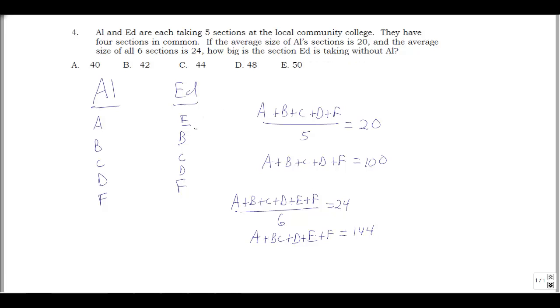We don't know how big the section Ed is taking without Al, that's section E. Well, we have these two equations. What we can do is subtract one from the other. These left-hand sides are almost the same, just the bottom one has this E. So if we take this thing in red here, and then we'll subtract off this thing above. Let's maybe circle that in green up here, red minus green. What we get is you'll get E on the left. So we get the number we want, 144 minus 100, that's 44. So our answer is C, 44.